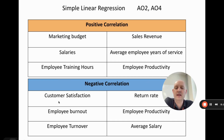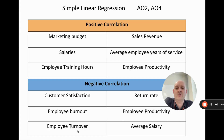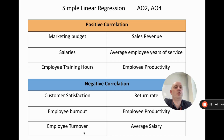For negative correlation: if customers are more satisfied with the product, the return rate — the number of products brought back for a refund — should go down. If employees are more burnt out from working too hard, productivity should go down because they're tired and less motivated. And as employee turnover goes up, average salary should in theory go down, because employees who have been at the company longest tend to get paid the most, so more turnover means more newer employees starting on lower salaries.